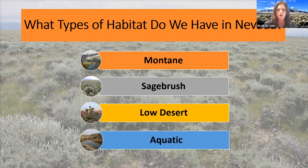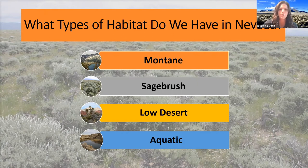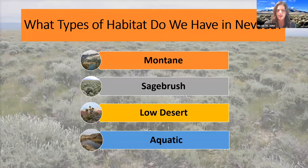Lastly, we have our aquatic habitat. This one is special because it's not necessarily determined by elevation — it's determined by water availability. You can find an aquatic habitat in any one of the other three habitat types. For example, we have Lamoille Lake up in the Ruby Mountains — that's an aquatic habitat in a montane area. We've got South Fork Reservoir in a sagebrush ecosystem, and we even have aquatic habitats in the low desert, such as Lake Mead or small streams and rivers.